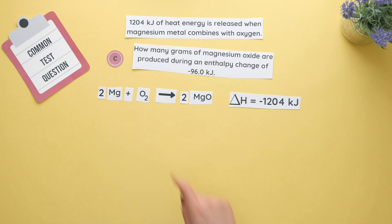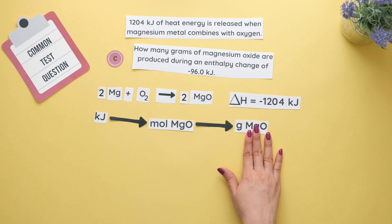Part C states how many grams of magnesium oxide are produced during an enthalpy change of negative 96.0 kilojoules. So we are given our enthalpy change of negative 96.0 kilojoules and asked to find the grams of magnesium oxide. We'll start with the given unit of kilojoules and make our way to moles of magnesium oxide then using the molar mass of magnesium oxide we'll find the grams.